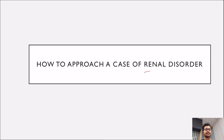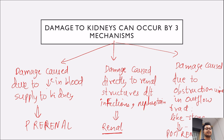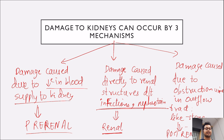Let us begin with our approach to a case of renal disorder in our exam. Damage to the kidneys can occur by 3 mechanisms. First is damage caused due to decrease in blood supply to the parts, which comes under pre-renal cause. Second is damage caused directly to the kidney due to infections or nephrotoxins, which comes under renal cause. Third is damage caused due to obstruction in the urine outflow tract like stones or stricture, which comes under post-renal cause.